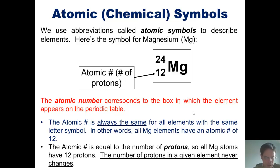Also, the atomic number is equal to the number of protons, so all magnesium atoms have 12 protons. The number of protons in a given element never changes.